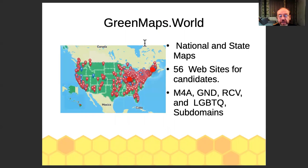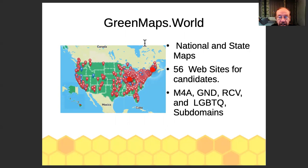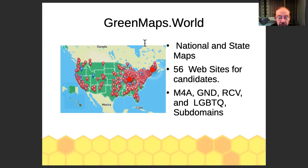I actually use Jinja very heavily. I built a major site for the United States Green Party, which is now spreading to Europe, particularly the United Kingdom. It has some 56 different websites run for candidates, state parties, and local parties. It has national and state maps, and you can view it as the Green Party map or a map of supporters for Medicaid for All, the Green New Deal, Ranked Choice Voting, or LGBTQ rights. There's a huge amount of complexity, so I use a ton of JSON, and I use Jinja templates to generate the JSON — that's trusted Jinja.